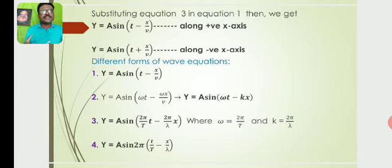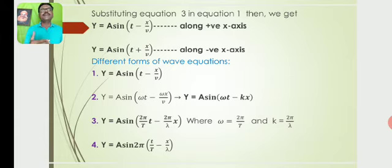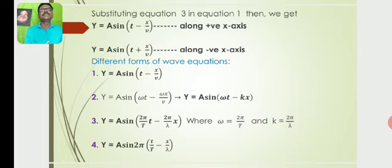The different forms of the wave equation are: Y = A sin(T − X/V), which is one form. Another form is Y = A sin(ωT − ωX/V). Then Y = A sin(ωT − KX). Also, Y = A sin(2π/T − (2π/λ)X), where ω = 2π/T and K = 2π/λ.